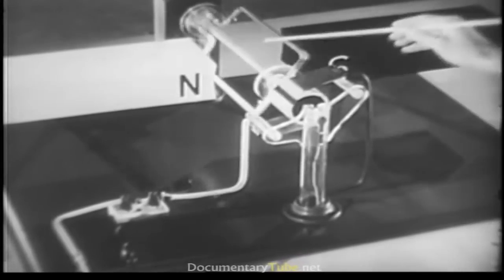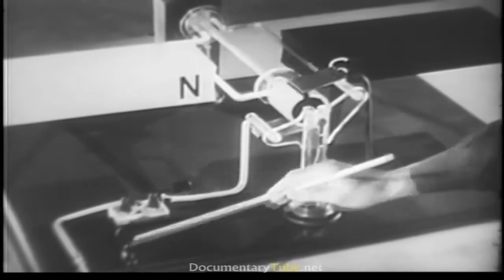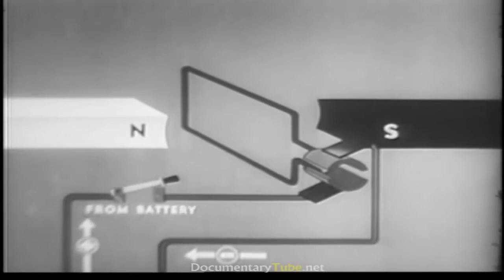When the switch is on, current always enters the wire loop through this brush, then returns to the battery via this brush. Let's see how it works out.